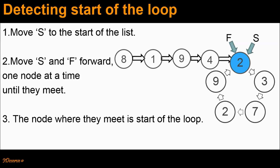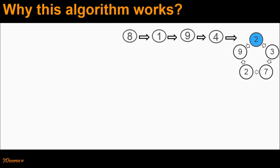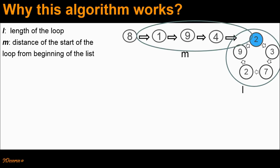Now you must be thinking as to why this algorithm works. Let's try to see why. Let L be the length of the loop — we measure distance in terms of number of links, so in this case L would be 5. Let M denote the distance of the start of the loop from the beginning of the list. From node 8, which is the beginning, we measure the distance to node 2, which is the start of the loop. So in this case, M would be 4.